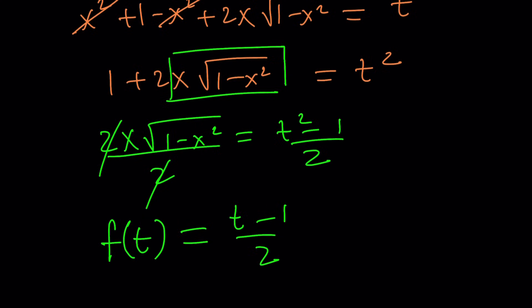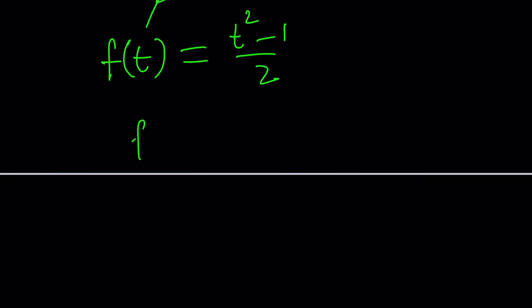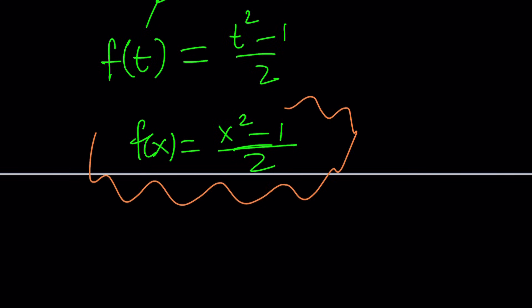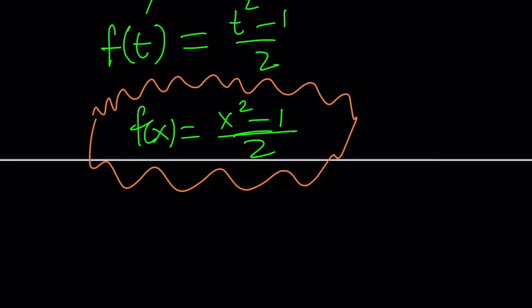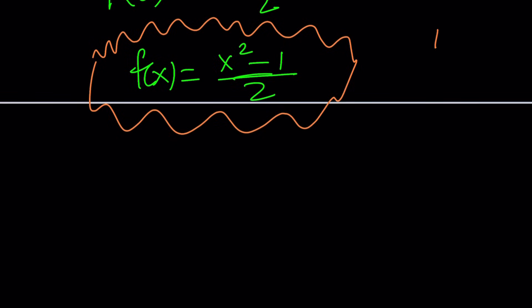So f of t equals t squared minus 1 over 2, which means f of x equals x squared minus 1 over 2. Now — does our expression from the first method simplify to this? That's for you to find out. This brings us to the end of the video. Thank you for watching. Please comment, like, and subscribe. Don't forget to check out A Plus B I. Until then, be safe and take care.